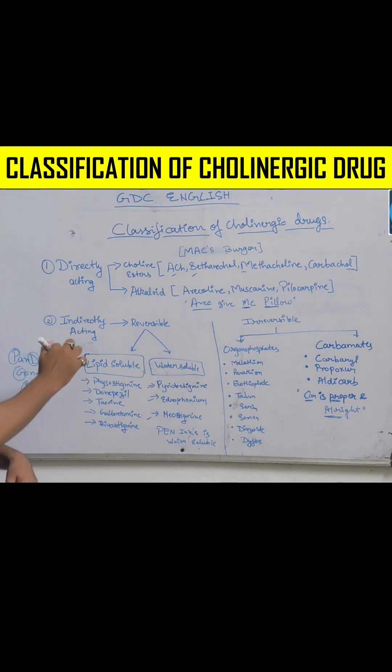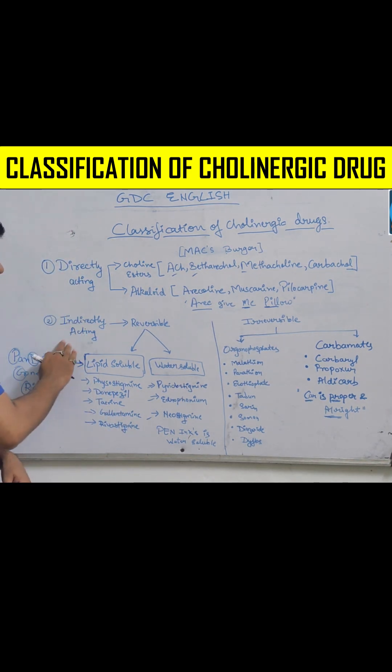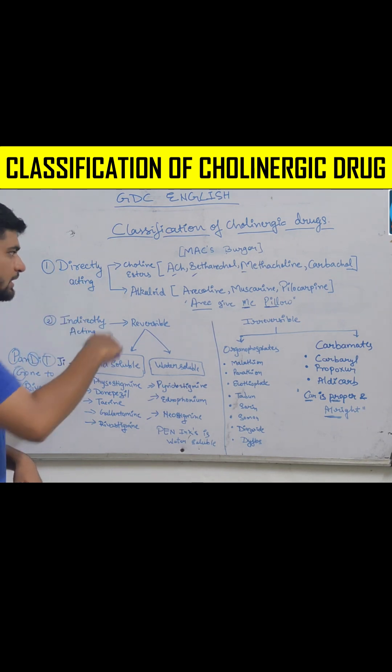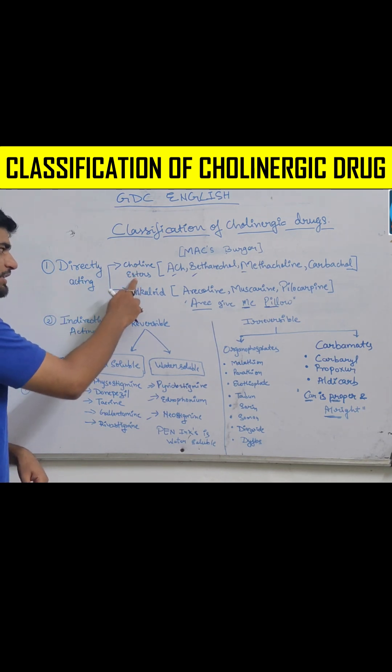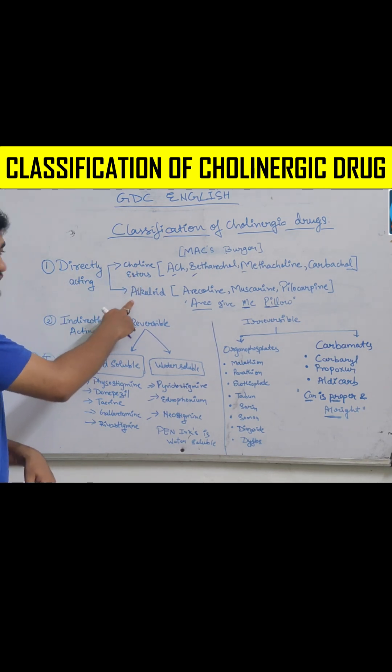Two types of cholinergic drugs: directly acting and indirectly acting. Directly acting are of two types: cholinesters and alkaloids.